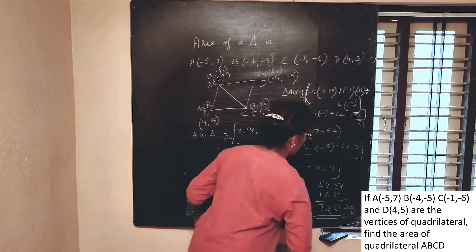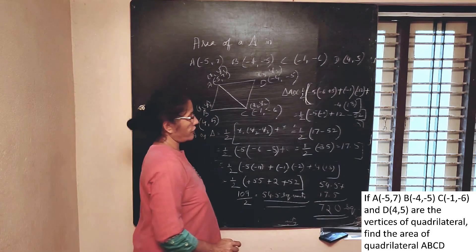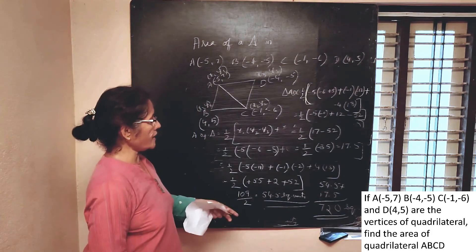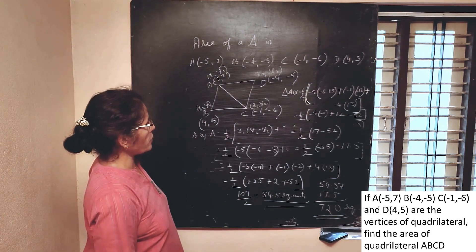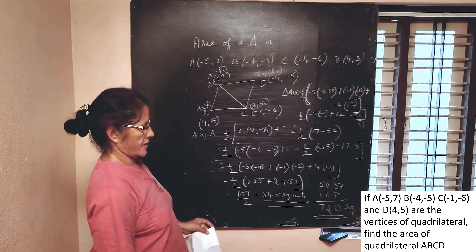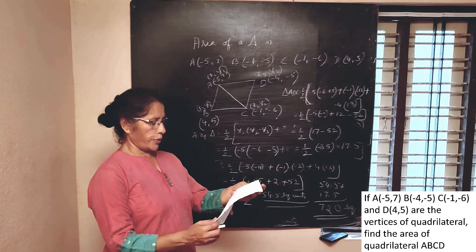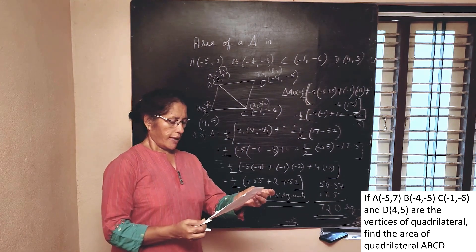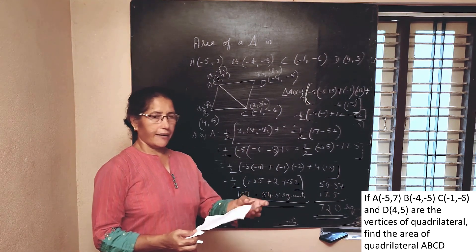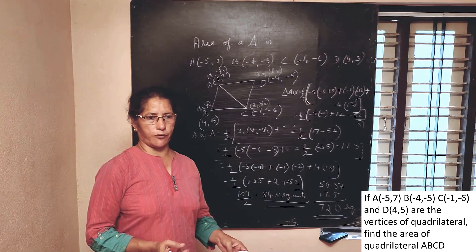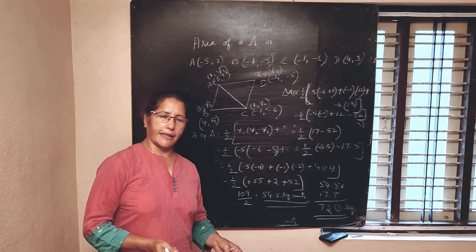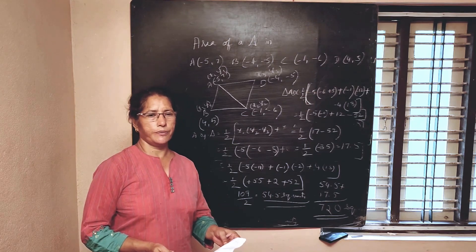So 55 plus 17 is 72 square units. I think I have worked on all the types of questions. Thank you.